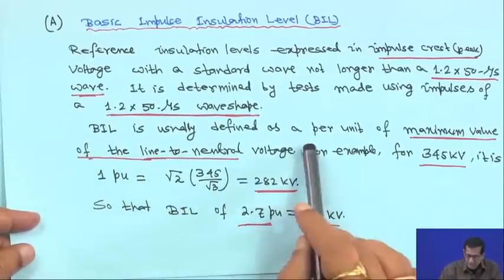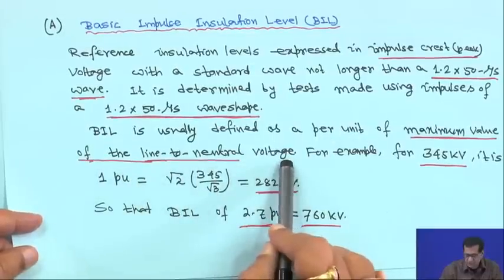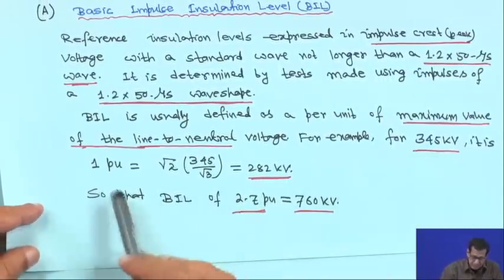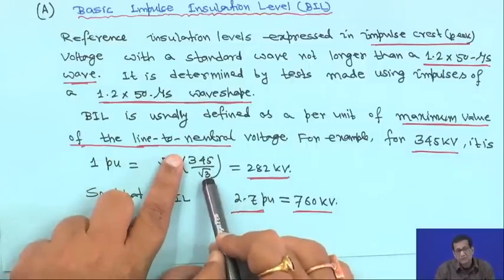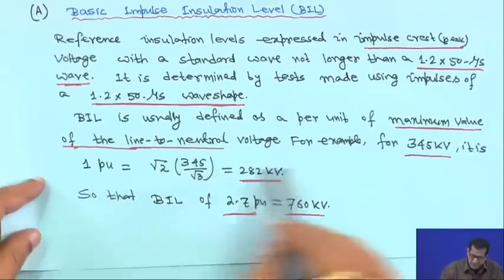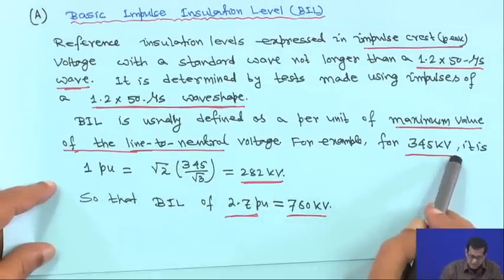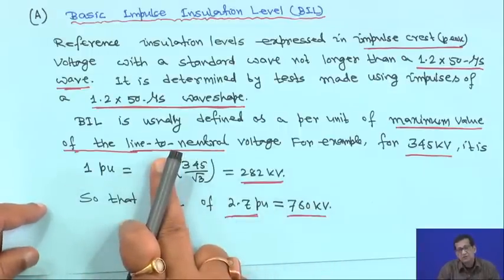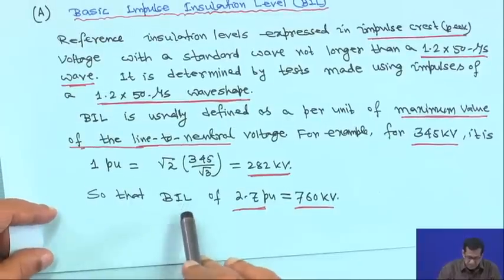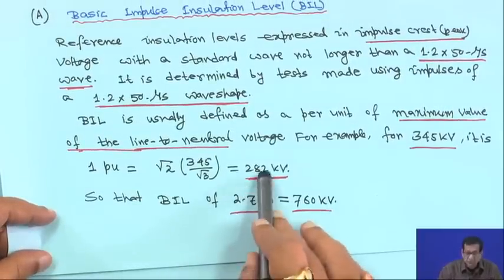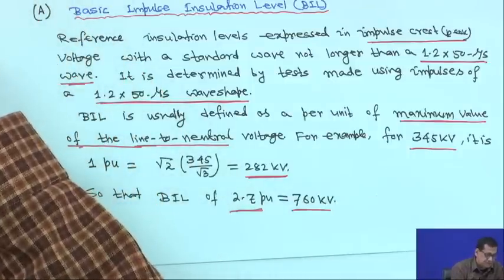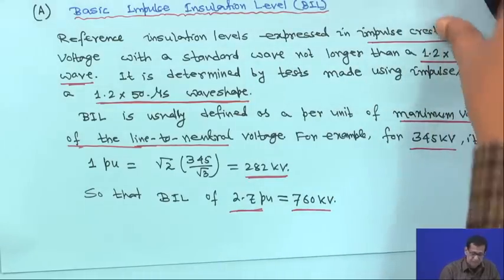BIL is usually defined as a per-unit value of the maximum line-to-neutral voltage. For example, for a 345 kV line, 1 p.u. equals 345/√3 multiplied by √2, giving 282 kV as the peak value. So if the BIL is 2.7 p.u., that means 2.7×282, which gives 760 kV.